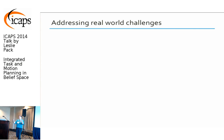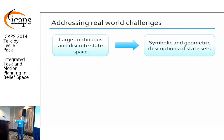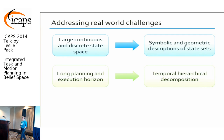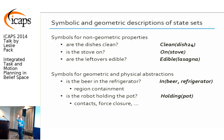Our approach is to deal with large continuous state and action spaces by using the language of logic and geometry to give short expressions that describe big sets of states. We address the long planning and execution horizon with an aggressive temporal hierarchical decomposition, gaining efficiency at the cost of some effectiveness. We deal with uncertainty by doing a replanning strategy in a very approximate, determinized model, but doing it in belief space — which forces us to wrestle directly with the question of what information the robot does and doesn't have about the state of the world.